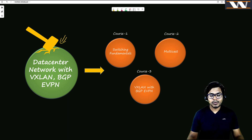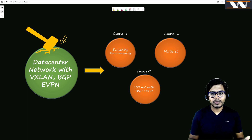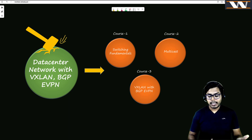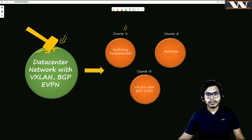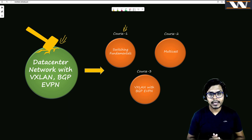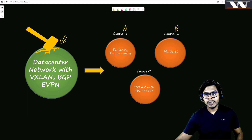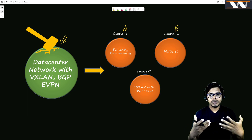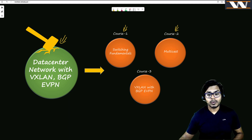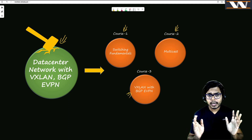The whole intent is to understand BGP VXLAN technology, but to do that we need to divide it into multiple courses — short and sweet, maybe a one-month course with 12 classes each. I've divided the complete course into three: course one on switching fundamentals, course two on multicast, and then with those two concepts under our belt, we'll be ready for VXLAN with BGP EVPN.